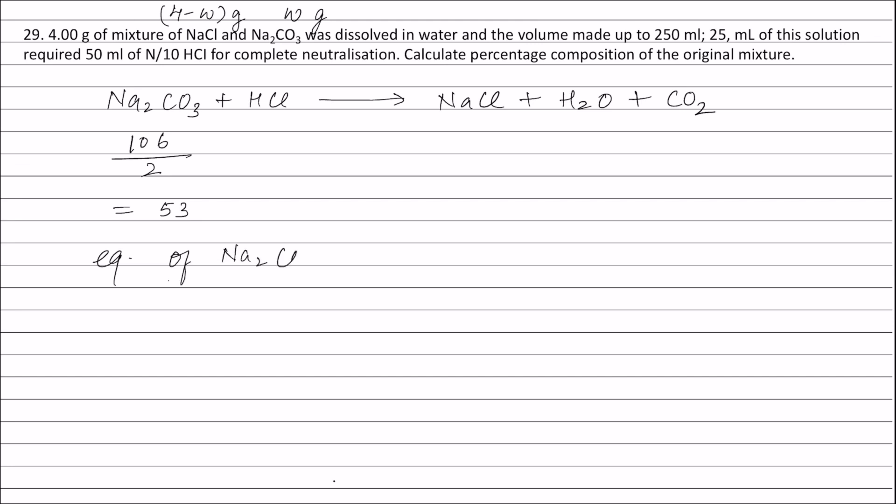Equivalents of sodium carbonate in 250 milliliters is W by 53. Equivalents of sodium carbonate in 25 milliliters will be W by 53 times 25 divided by 250, which equals W by 53 times 10.